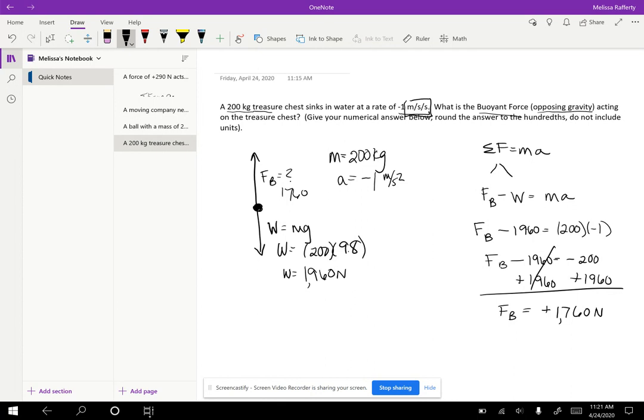So to enter this answer round to the hundredths. So you'd enter it as no commas, no plus sign, no unit. So just 1760. And then if you round it to the hundredths, it's 0.00. So this is what the workbook, that's the answer it's looking for.